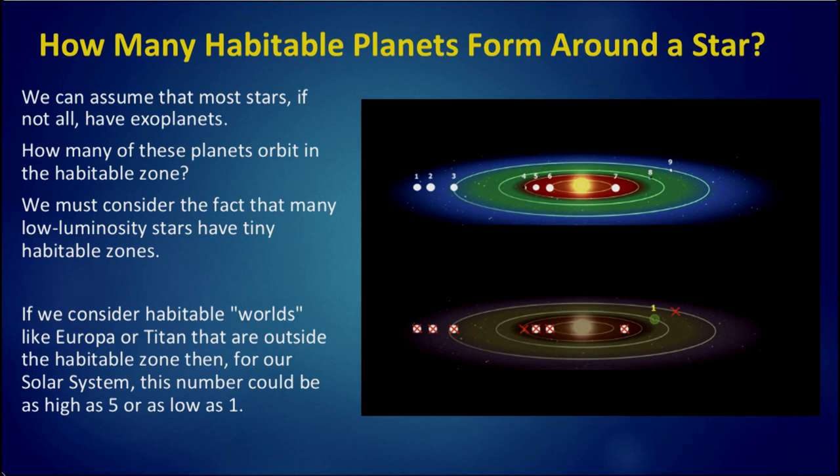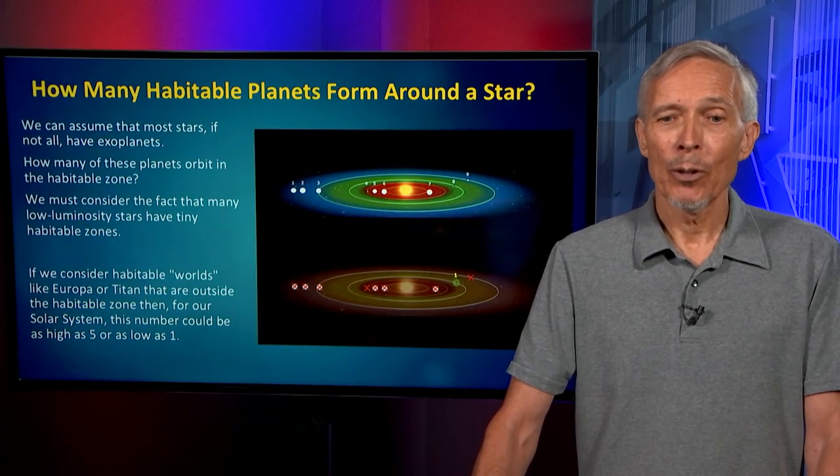But how many, or what fraction of these planets orbit in the habitable zone, traditionally defined? And how do we fold in the fact that so many of the stars in play are low mass stars, where we haven't done much surveying and don't have very good statistics, and they have very tiny habitable zones?